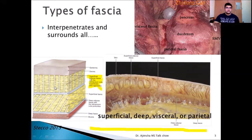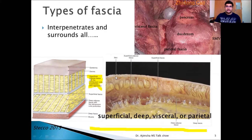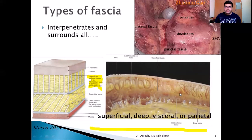So the two additional structures are retinaculum cutis superficialis and retinaculum cutis profundus. Looking at the same structure under electron microscopy, you can see the skin, then the superficial adipose tissue, the retinaculum cutis superficialis, the superficial fascia, and then the deep adipose tissue. In between the deep adipose tissue you can see the retinaculum cutis profundus.